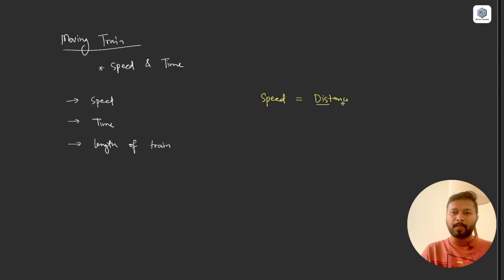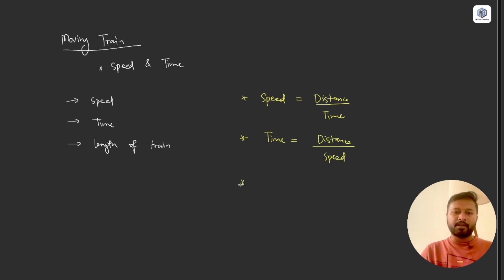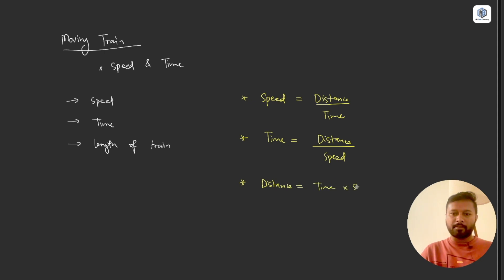The first formula is: speed equals distance divided by time. The second follows from that: time equals distance divided by speed. The third: distance equals speed multiplied by time. The length of the train is generally treated as the distance. These three formulas are the only ones we are going to use.